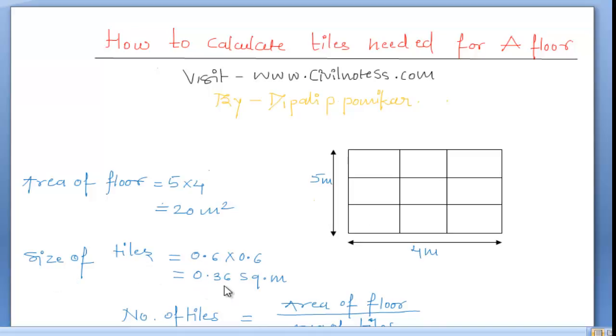We know the size of tiles, so just multiply these two terms: 0.6 into 0.6, and we get 0.36 square meters. This is the area of tiles.